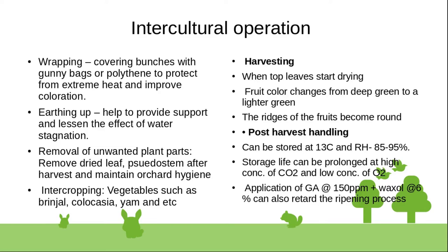Removal of unwanted plant parts includes removing dried leaves and the pseudostem after harvest to maintain orchard hygiene. Intercropping with vegetables such as brinjal, cauliflower, capsicum, and others is also practiced with banana.